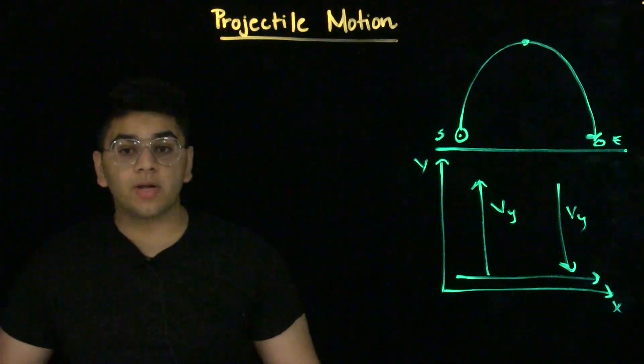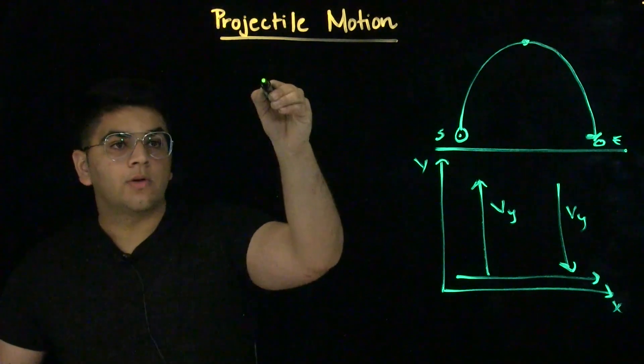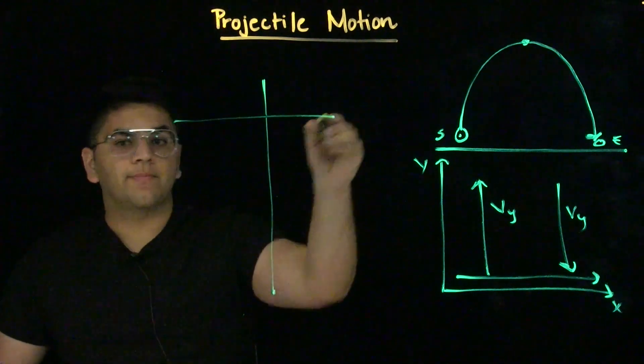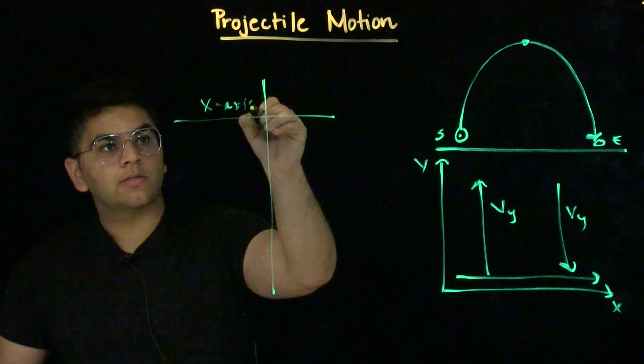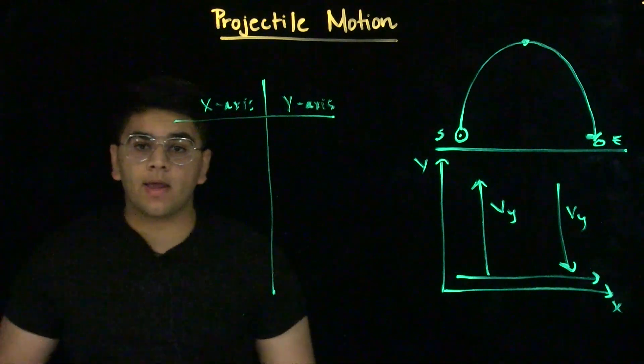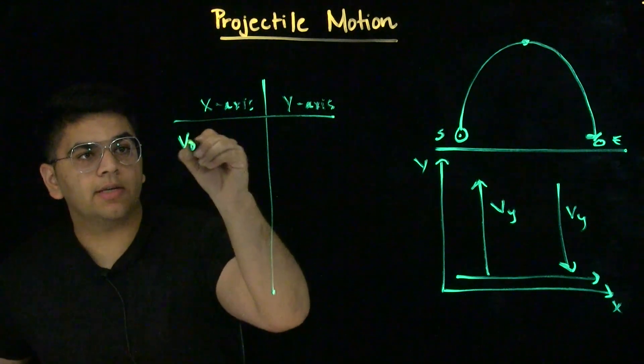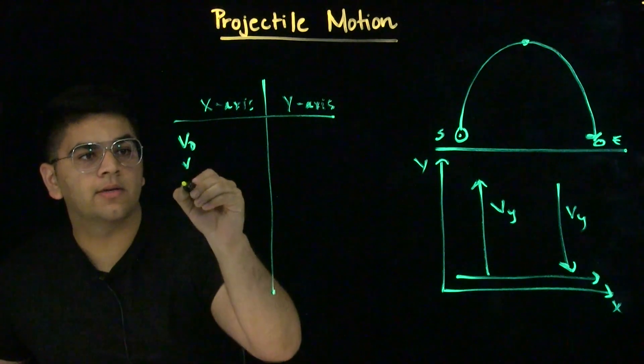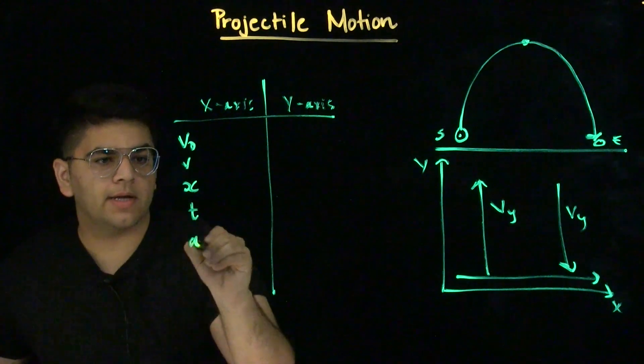Best way always is to split up your problem into the separate axes. Split your page in half. One side for the x-axis, other side for the y-axis. And on each axis, then you list all of your kinematic variables. So, you have initial velocity, final velocity, displacement, time, and acceleration.